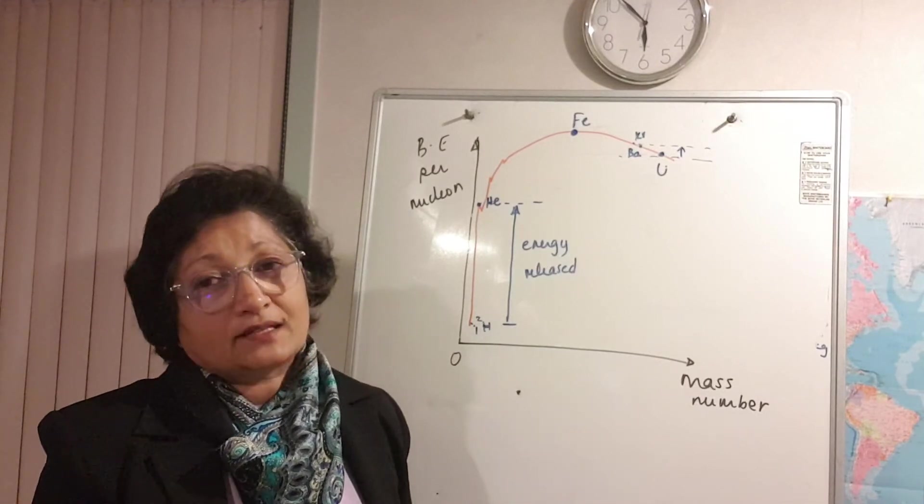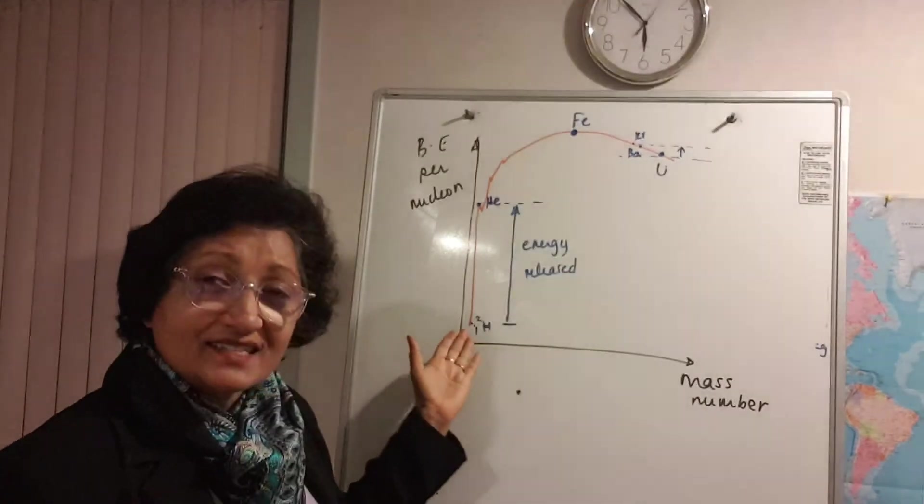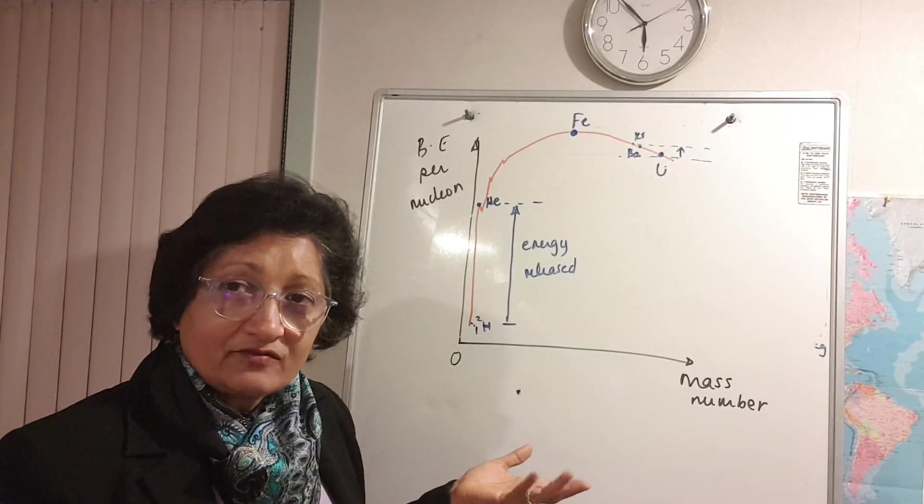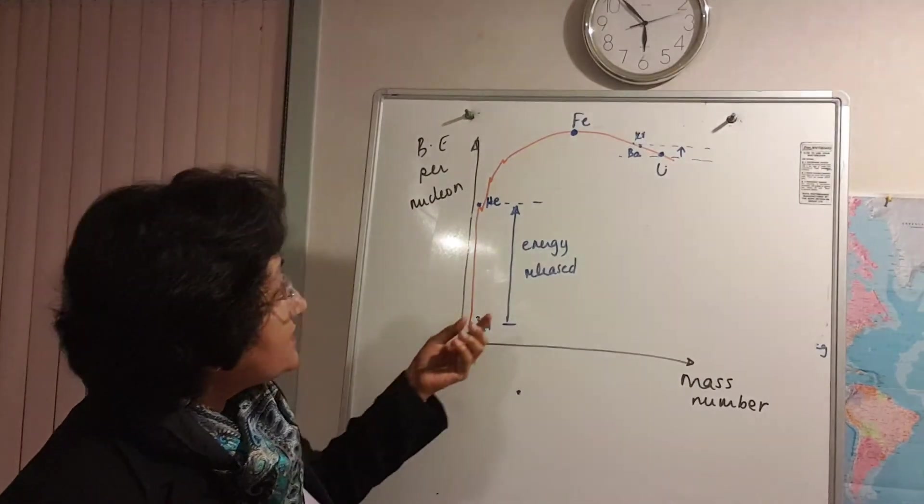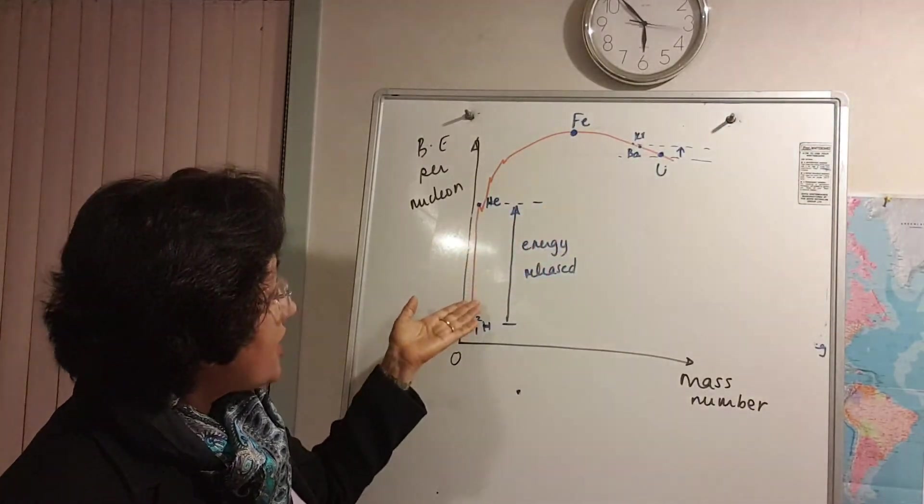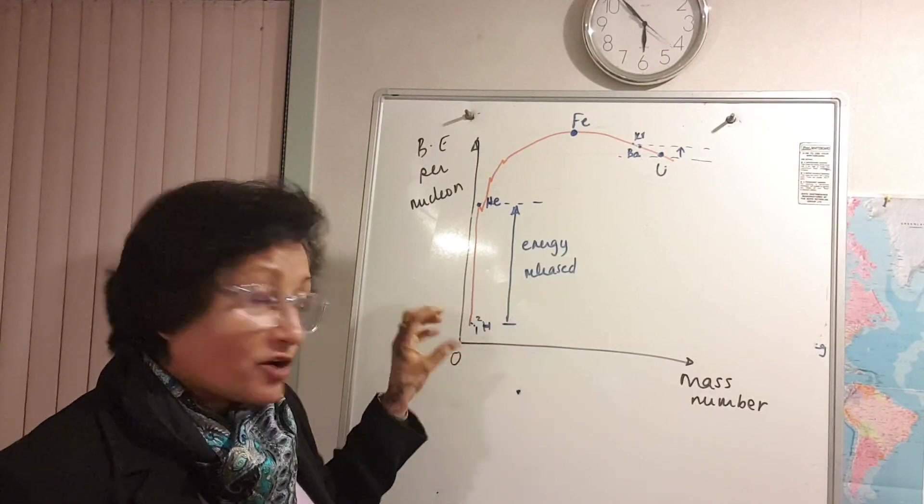is try because we need energy in this world to keep things going for all sorts of things. So rather than depending on nuclear fission for energy, they're trying to get energy from nuclear fusion. Now the products, the raw materials are available because deuterium is there in sea water.